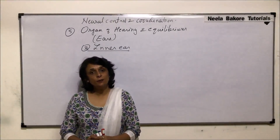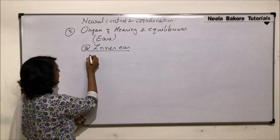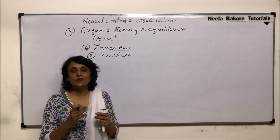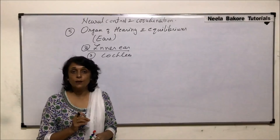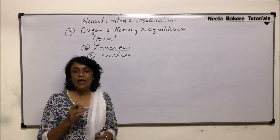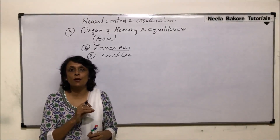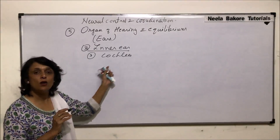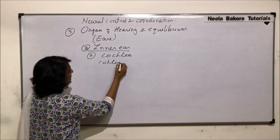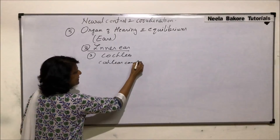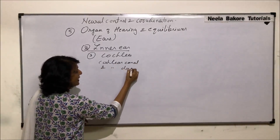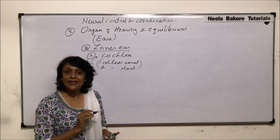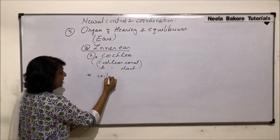We will now take up the third part of the inner ear, that is the cochlea. The cochlea is actually two things combined: there is a cochlear duct, which is the part of the membranous labyrinth, and a bony part known as the cochlear canal. These two things together make the cochlea — the cochlear canal is part of the bony labyrinth and the cochlear duct is part of the membranous labyrinth.